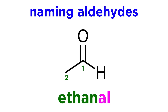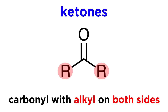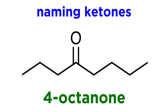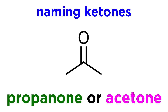Aldehydes will be named with the suffix -al, like ethanal. Next, let's look at a functional group that is extremely similar to the aldehyde. If instead of having alkyl on one side of the carbonyl, we have alkyl on both sides of the carbonyl, this will be called a ketone. The corresponding suffix will be -one, for ketone, specifying the location of the carbonyl on the main chain. This is 4-octanone. This is cyclohexanone. Sometimes we will use a common name, like for propanone, which is also known as acetone.